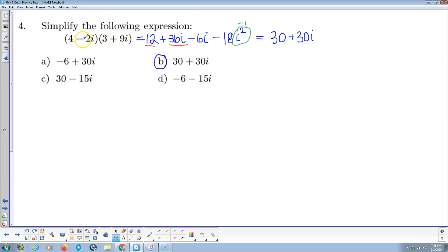We distribute the negative 2i to both these guys. Negative 2i times 3 is negative 6i. Negative 2i times 9i is negative 18i². i² is really negative 1. So negative 18 times negative 1 is actually positive 18. That makes this like terms with a positive 12 in the front. So 12 and 18 add up to make 30. 36i and negative 6i make 30i. So clearly, answer B is correct.